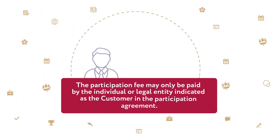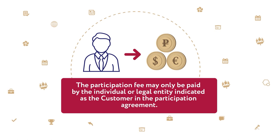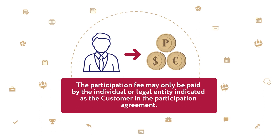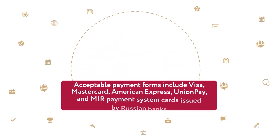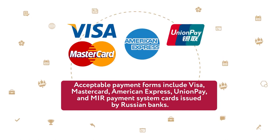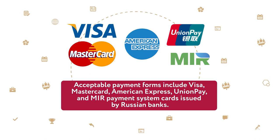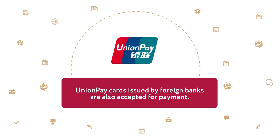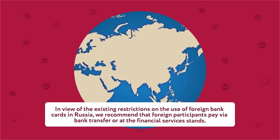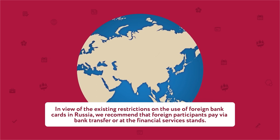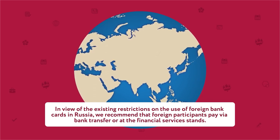The participation fee may only be paid by the individual or legal entity indicated as the customer in the participation agreement. Acceptable payment forms include Visa, MasterCard, American Express, UnionPay, and Mir payment system cards issued by Russian banks, as well as UnionPay payment system cards issued by foreign banks. In view of the existing restrictions on the use of foreign bank cards in Russia, we recommend that foreign participants pay by bank transfer or at the financial services stands.